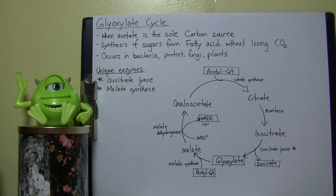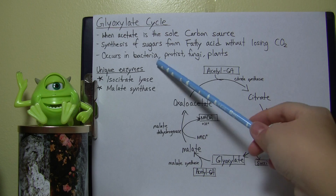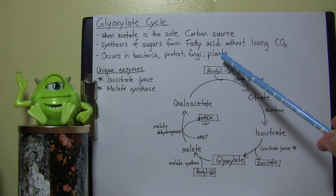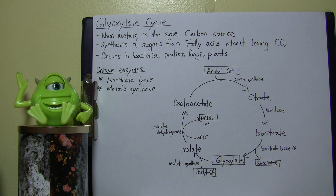The glyoxylate cycle is important for microorganisms — bacteria, fungi, and plants — that live on a medium where acetate is the sole carbon source.